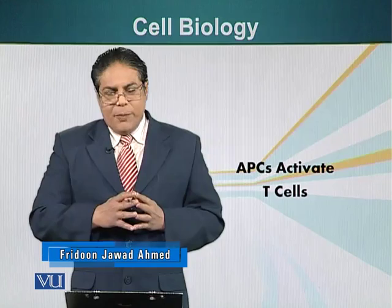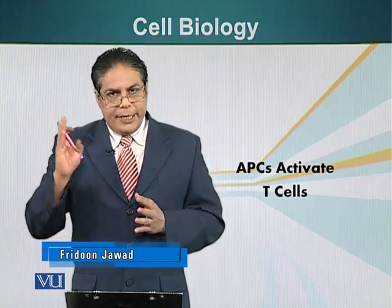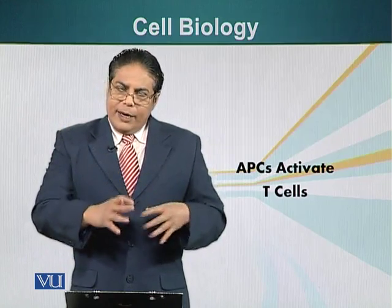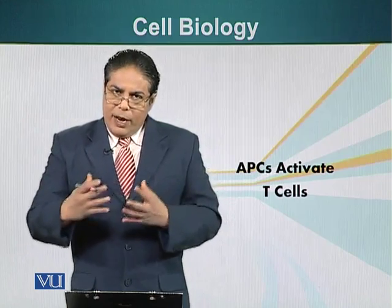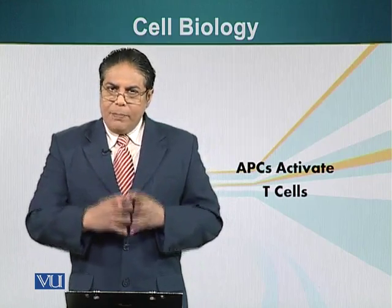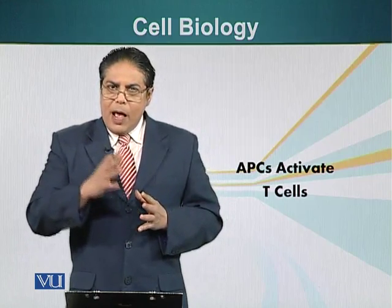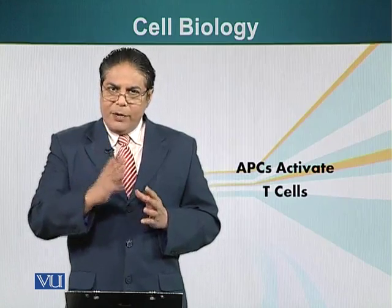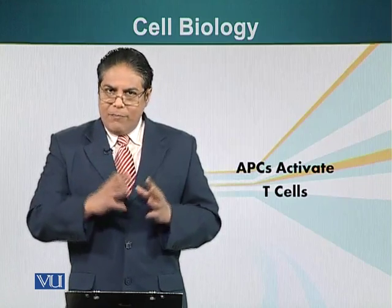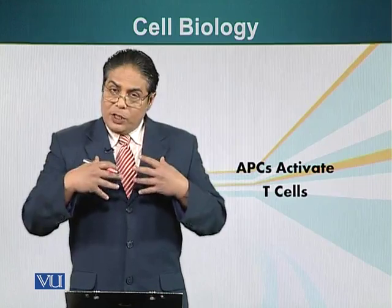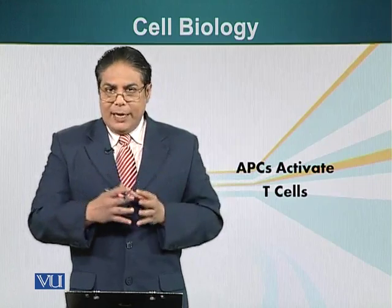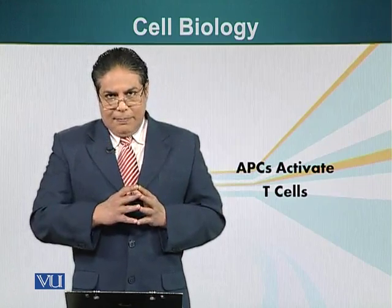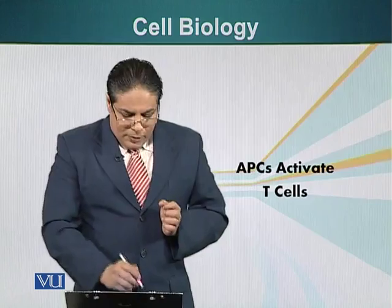The adaptive immune system — being T-cells and B-cells — are activated directly or indirectly by the innate immune system. The important component of the innate immune system which activates the adaptive immune system is the dendritic cell. Let's see how that happens.